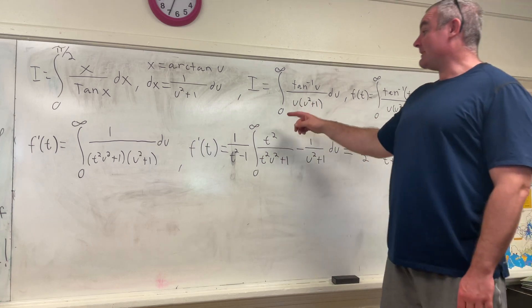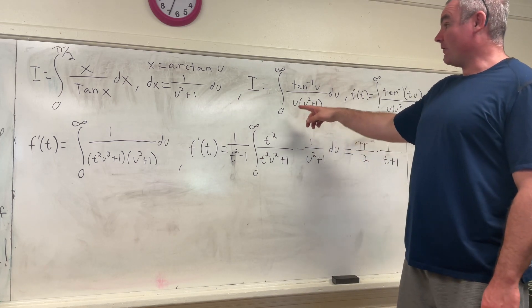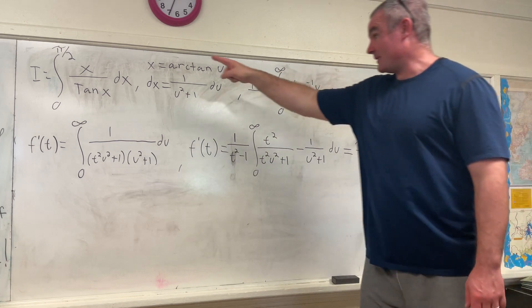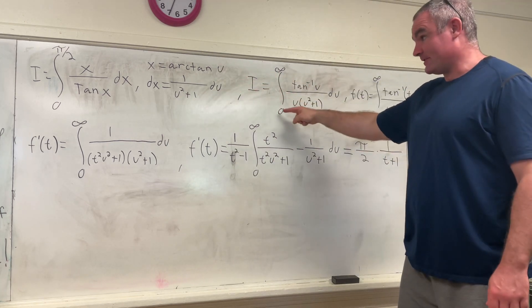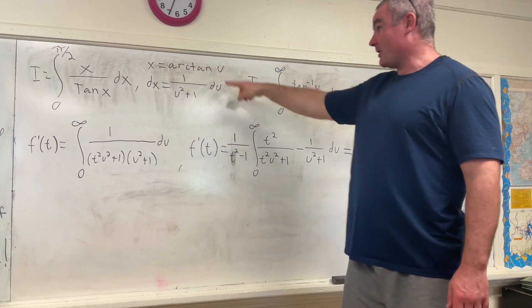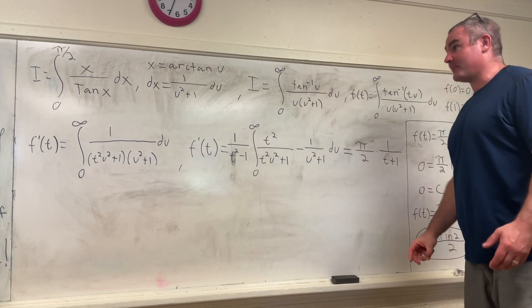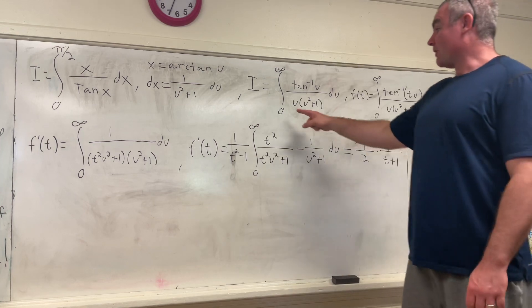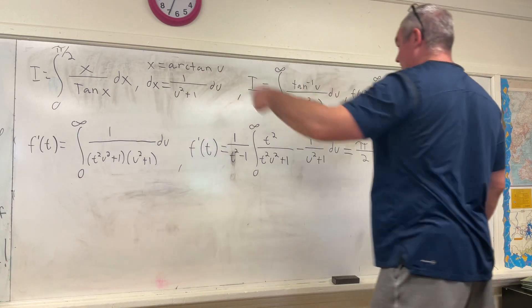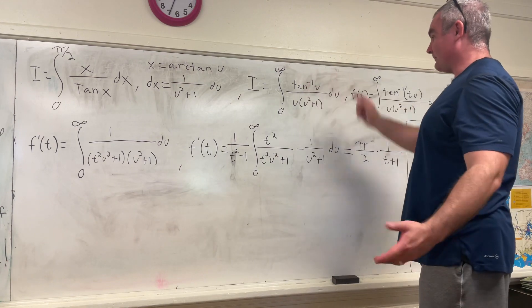Performing that substitution, we get a change of bounds. So if you plug in, we have x equal to 0. So 0 is equal to the arctangent of 0. And where x is pi over 2, pi over 2 must be equal to the arctangent of something. That something would have to be infinity. So our bounds are 0 to infinity. Our x is simply our substitution directly, tangent inverse u.